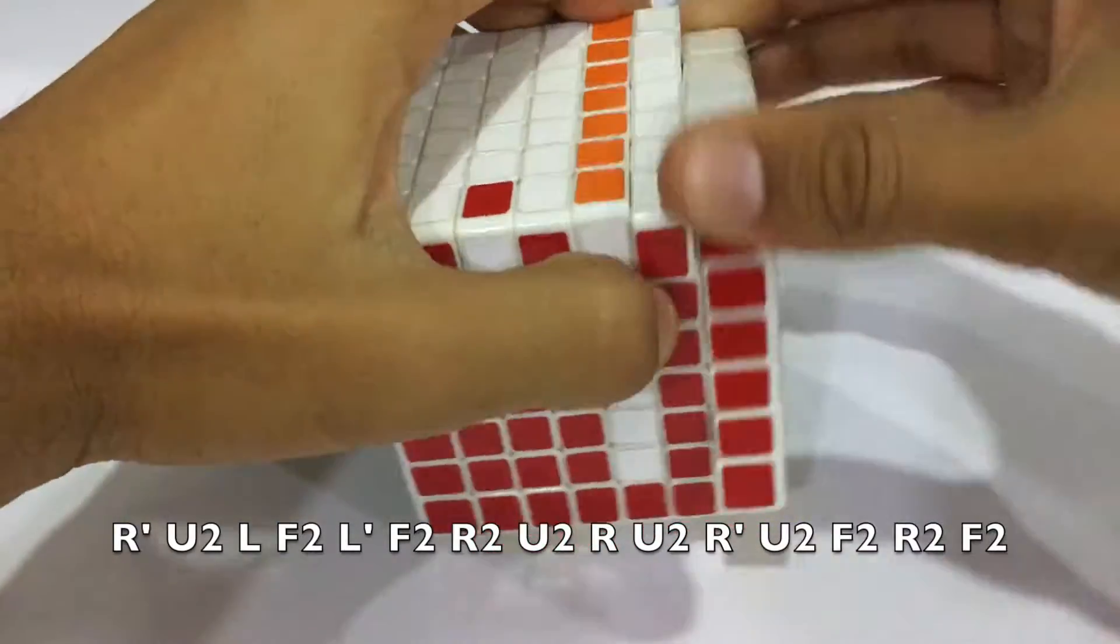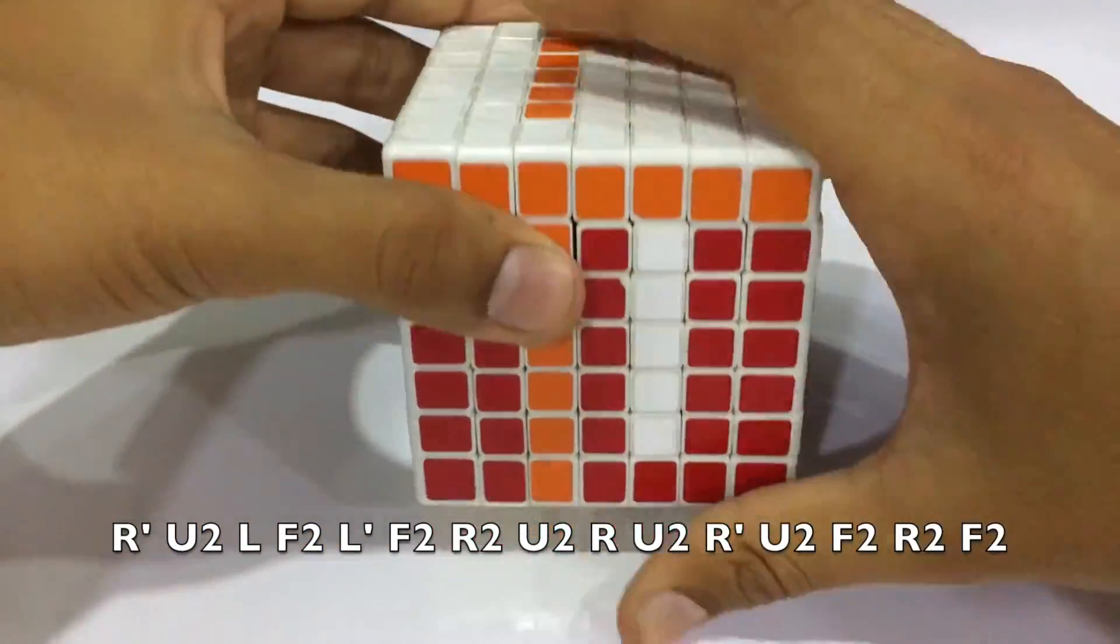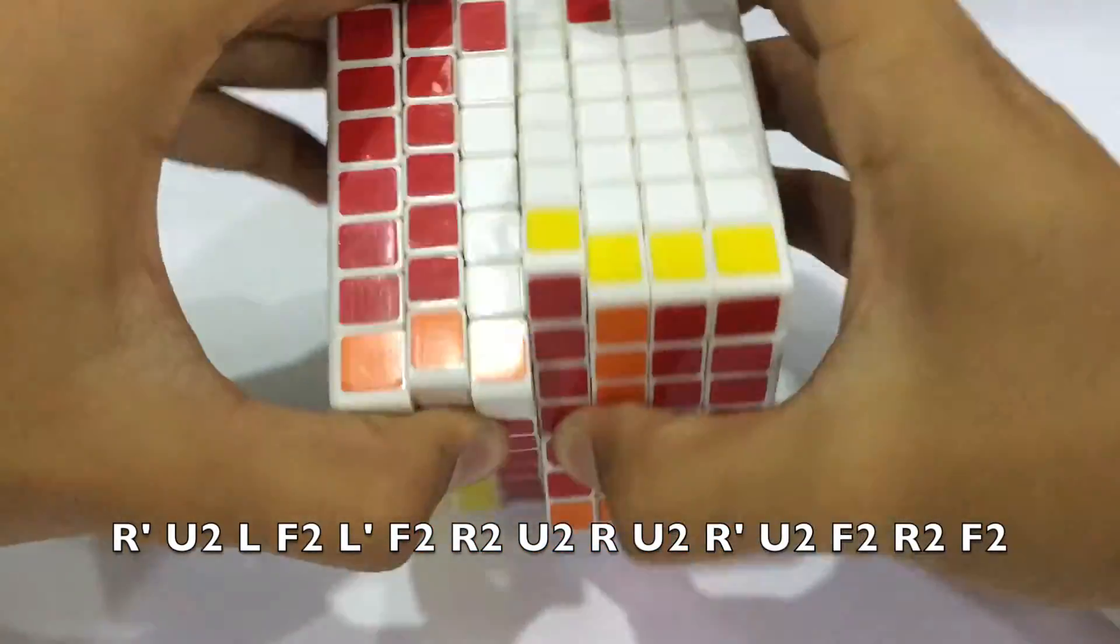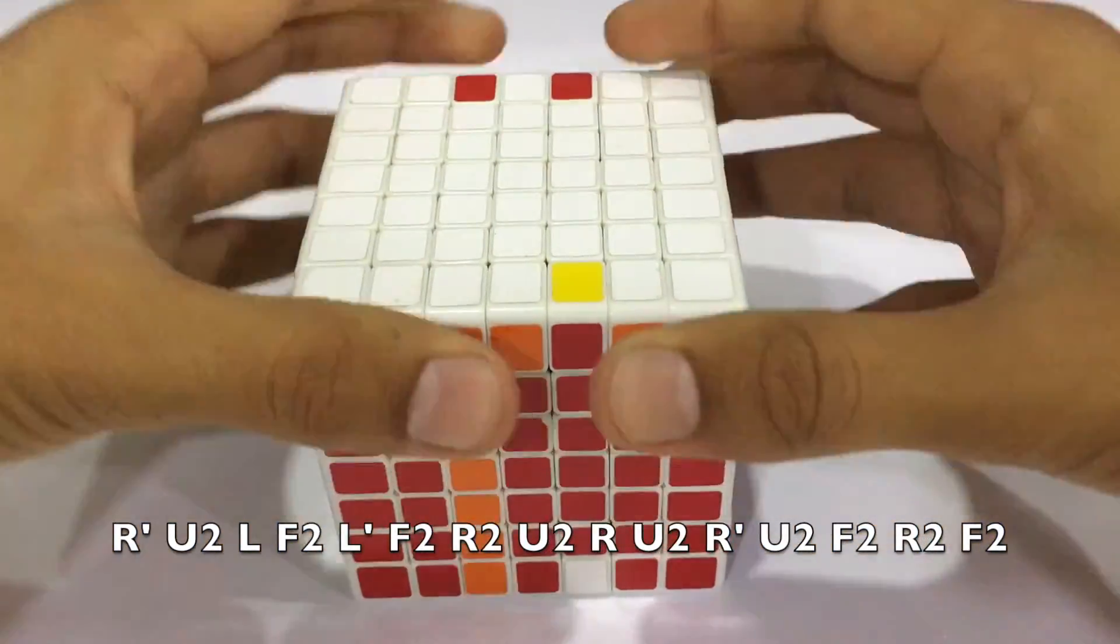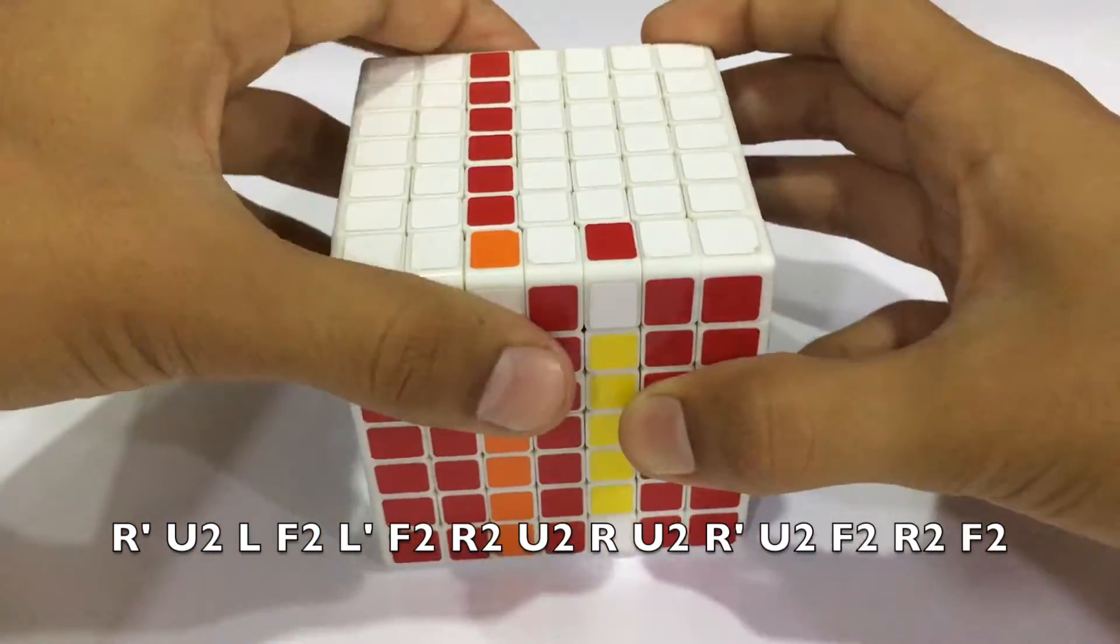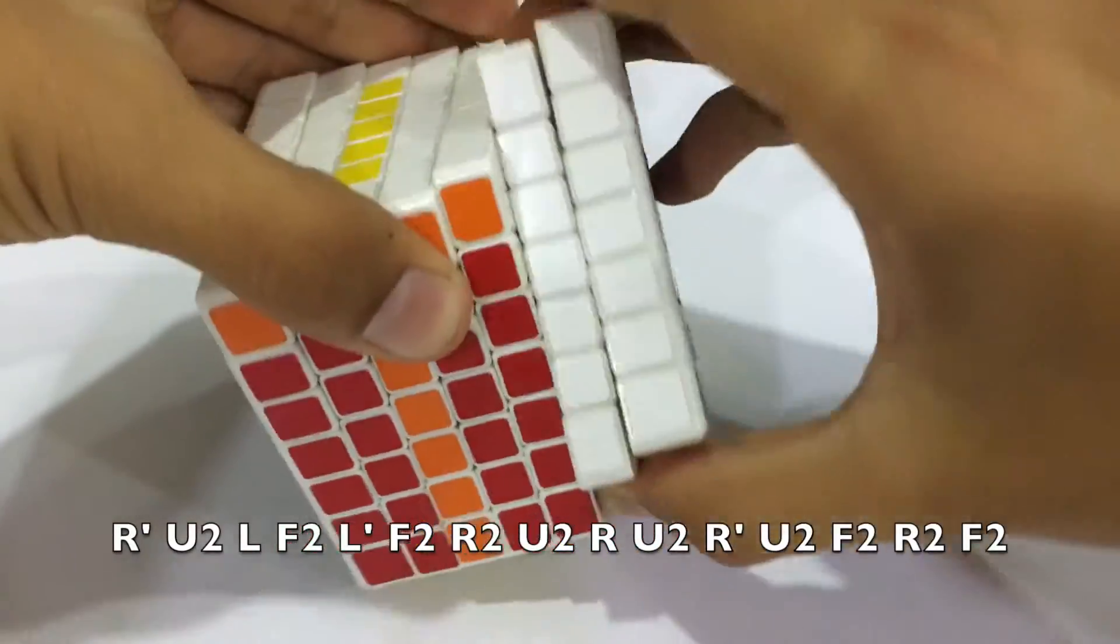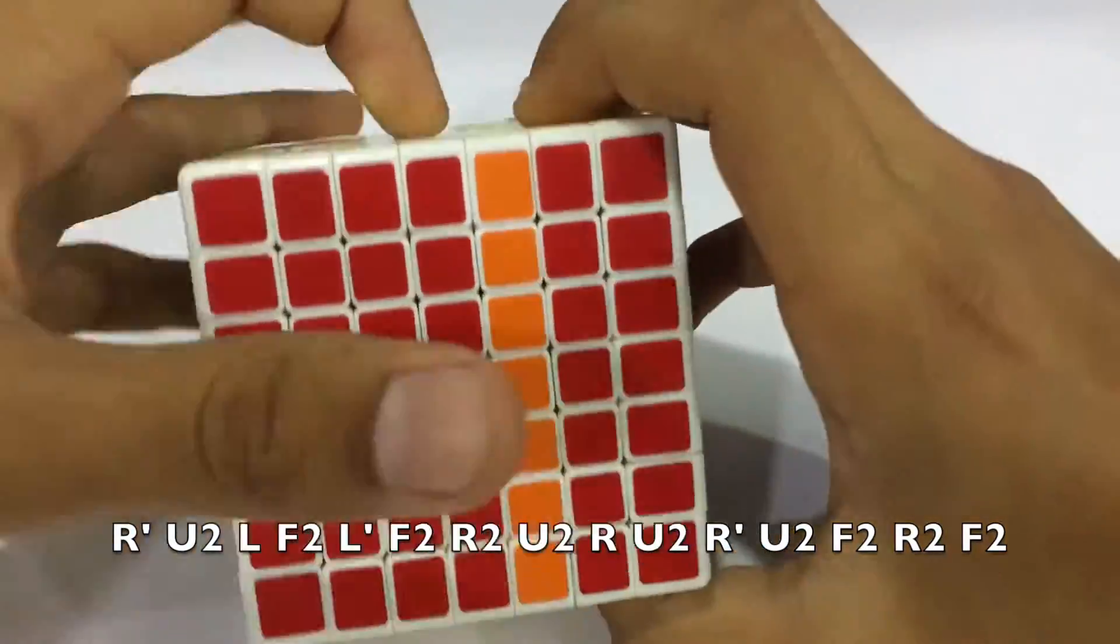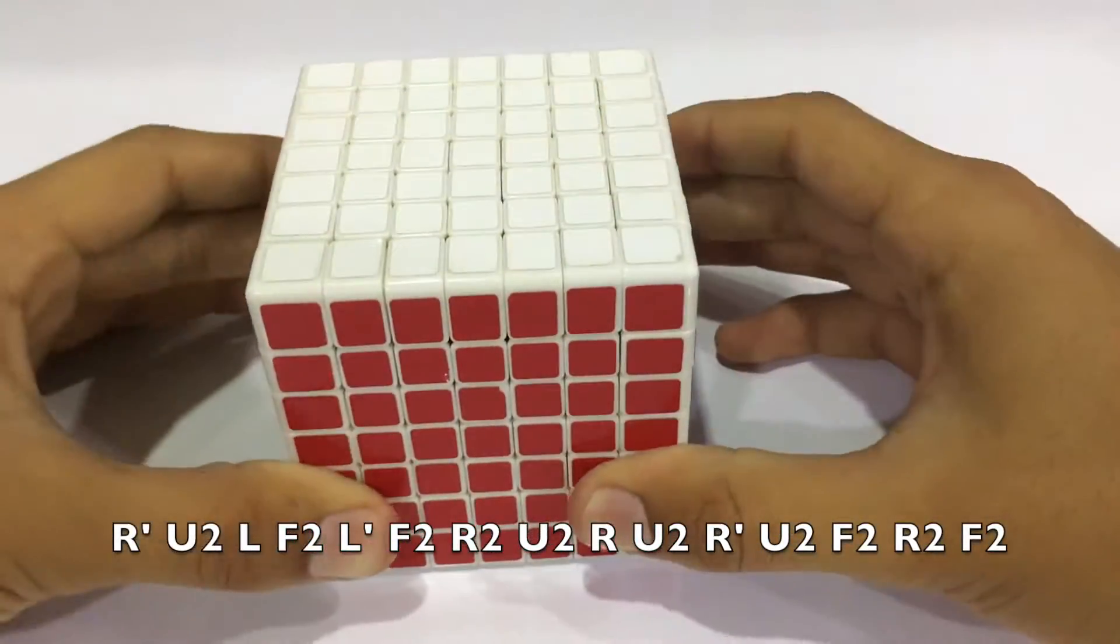It is right down, U2, left down, F2, left up, F2, right twice, U2, right inverted once, U2, right inverted once, U2, F2, right twice and front twice.